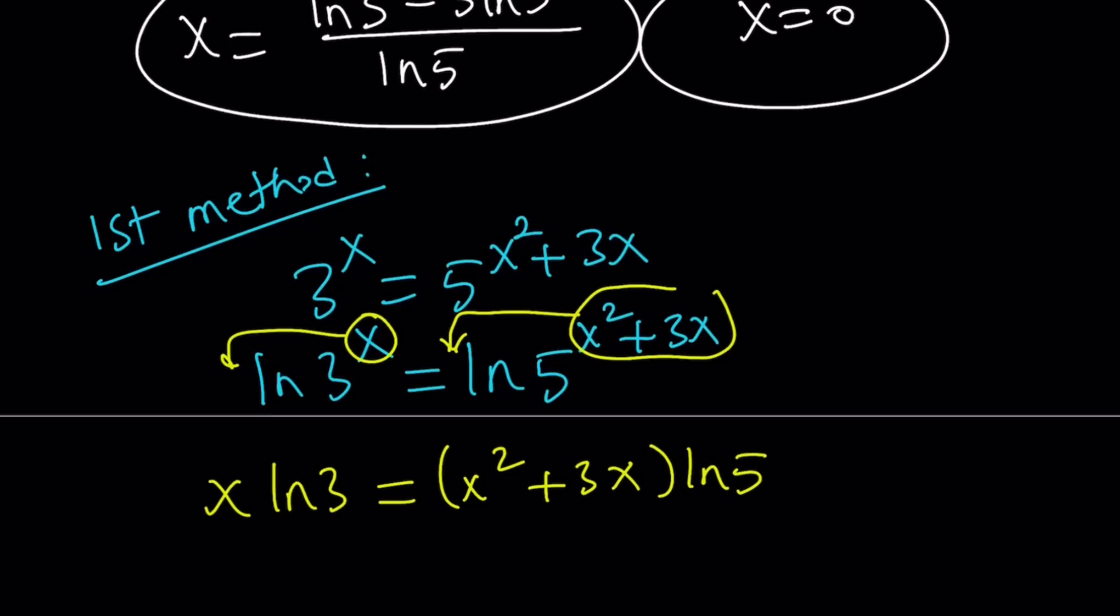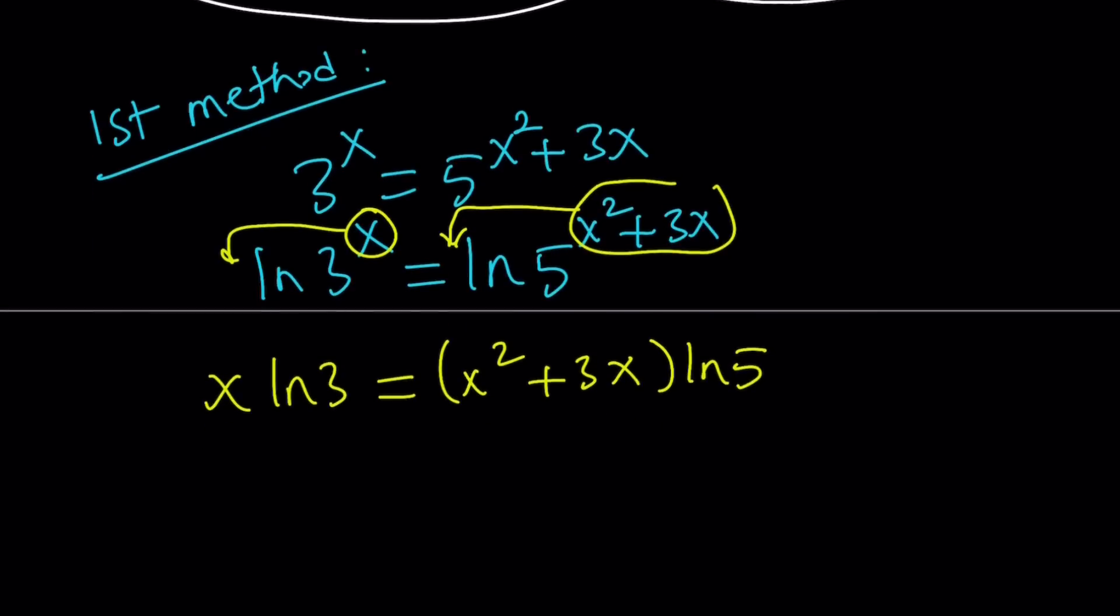Awesome. What am I going to do with this? Well, here's the thing. We're going to distribute this and put it together in some form so we can factor it. So, here's what we're going to do. We're going to write x·ln3 = x²·ln5 + 3x·ln5.